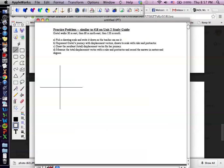Gretel walks 30 meters east, then 60 meters northeast, then 120 meters south. So we want to chart her journey and see where she ends up.